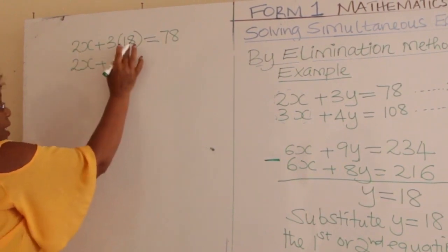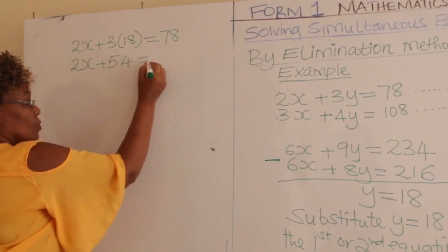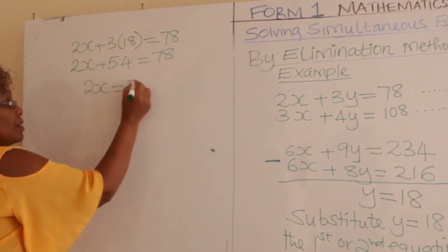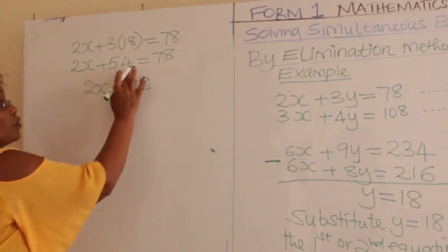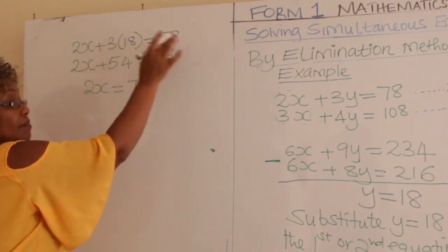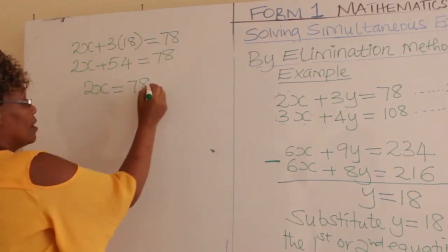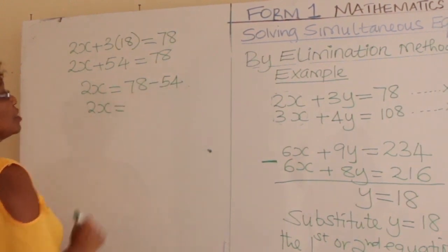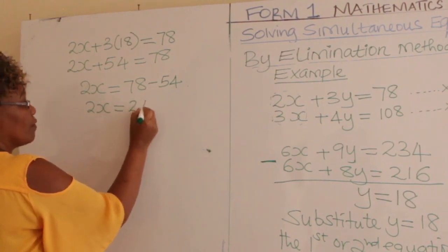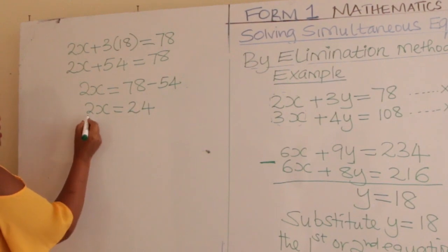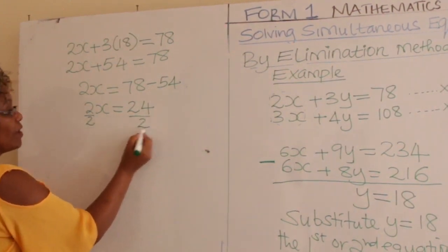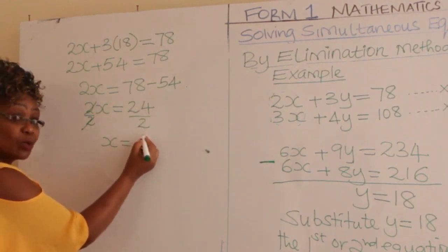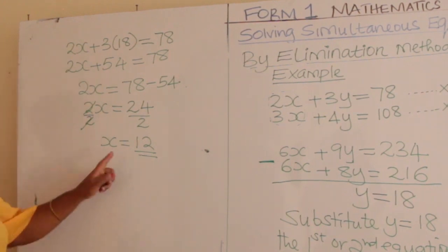Substituting y equals 18: 2x plus 3 times 18 equals 78, so 2x plus 54 equals 78. Taking 54 to the other side gives 2x equals 78 minus 54, which is 24. Dividing both sides by 2, x equals 24 over 2, which gives us x equals 12.